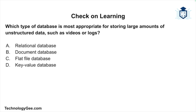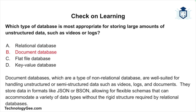Final question: Which type of database is most appropriate for storing large amounts of unstructured data such as videos or logs? Would it be a relational database, a document database, a flat file database, or a key-value database? The correct answer is a document database. Document databases, which are a type of non-relational database, are well suited for handling unstructured or semi-structured data such as videos, logs, and documents. They store data in formats like JSON and BSON, allowing for flexible schemas that can accommodate a variety of data types.